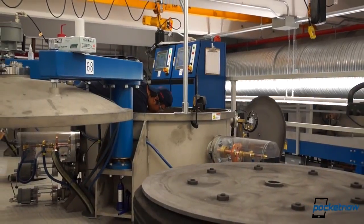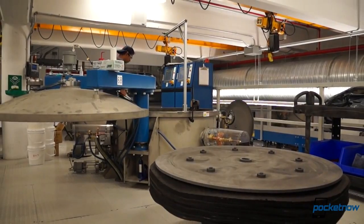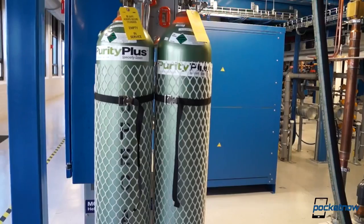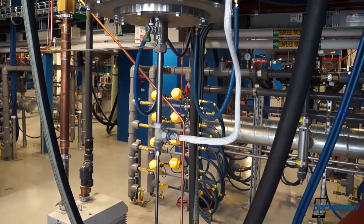The full crucible is then placed inside the furnace where it sits atop a finger, a small platform cooled by liquid helium that prevents the sapphire seed from melting too early.